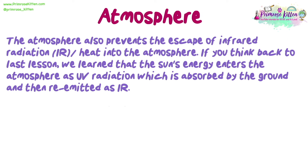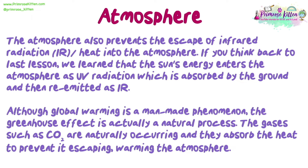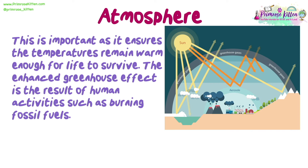The atmosphere also prevents the escape of infrared radiation, IR, or heat into space. Thinking back to last lesson, we learned that the Sun's energy enters the atmosphere as UV radiation, which is absorbed by the ground and then re-emitted as IR. Although global warming is a man-made phenomenon, the greenhouse effect is actually a natural process. Gases such as CO2 are naturally occurring and they absorb the heat to prevent it escaping, warming the atmosphere. This is important as it ensures temperatures remain warm enough for life to survive.